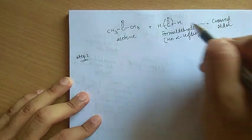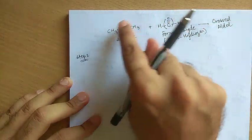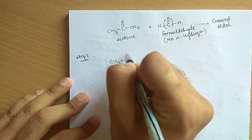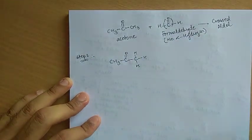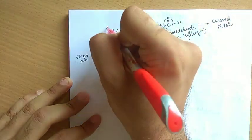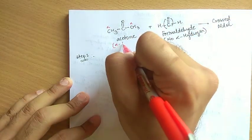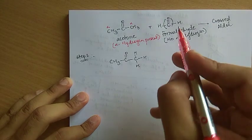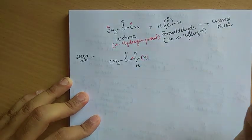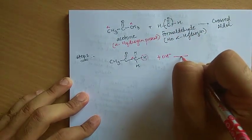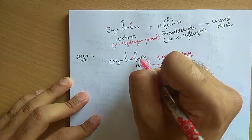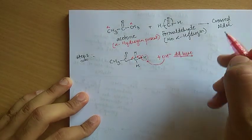In the crossed aldol, Step 1: OH⁻ attacks the alpha hydrogen. Formaldehyde has no alpha carbon, so it has no alpha hydrogen and cannot be involved in Step 1. Only acetone can participate in Step 1 because it has alpha carbons with hydrogens on them. So OH⁻ attacks the alpha hydrogen of acetone, the hydrogen leaves as H⁺, and a carbanion CH3–C(=O)–CH2⁻ is formed.